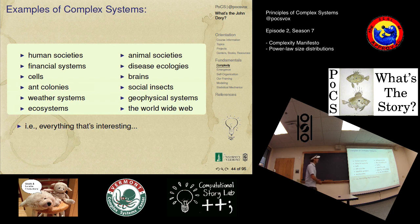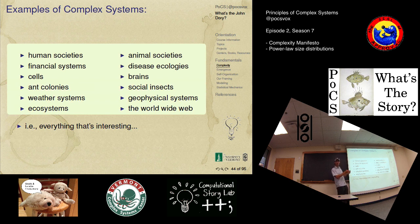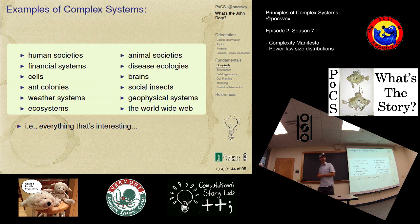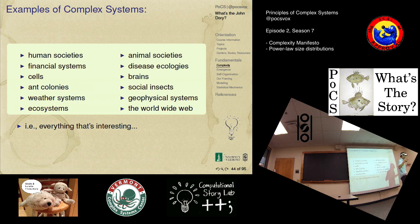Complex systems — everything that's basically interesting falls into this category. There are things we've been able to focus on at different times because the data has become available. There are transitions. Astronomy is a great example: around 2000 we go from single observatories — where for your PhD you get a few weeks at a telescope and if it's cloudy you're in trouble — to arrays of telescopes, and it's a different game because you have to be data-crunching machines. Every five to ten years, suddenly there's an array ten times as big.